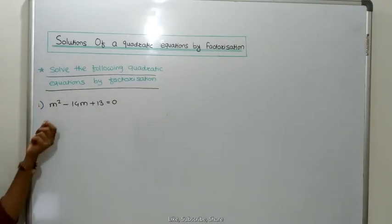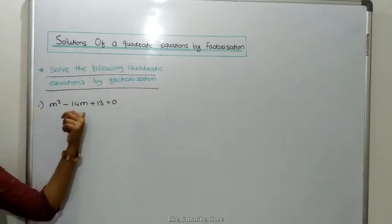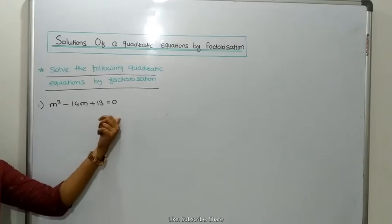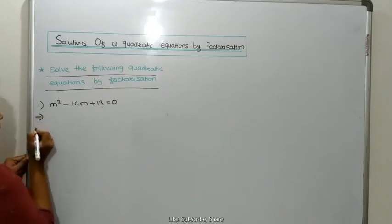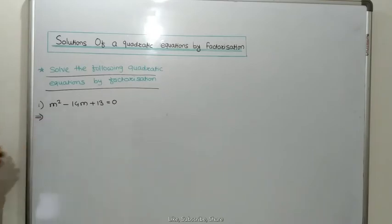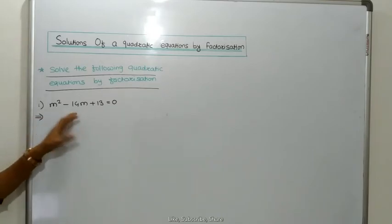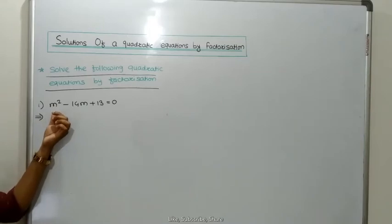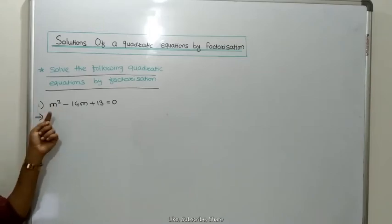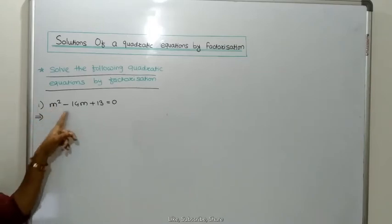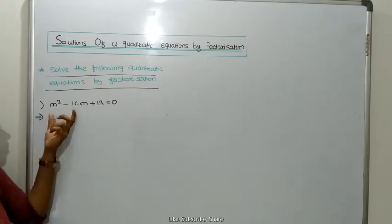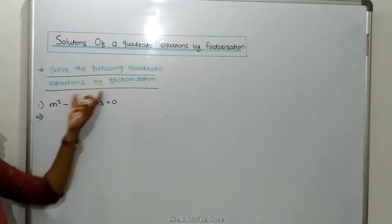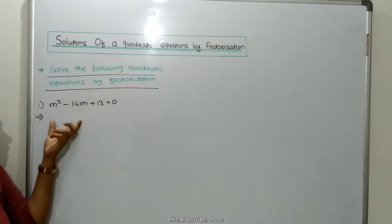The first question is: y squared minus 14m plus 13 is equal to 0. These are the solved examples from your book. We have to discuss how to solve this. This is the quadratic equation because the maximum index is 2 and only one variable is there. By using factorization, we have to solve this.